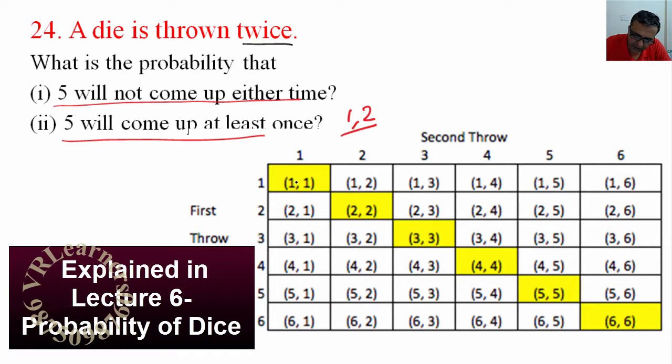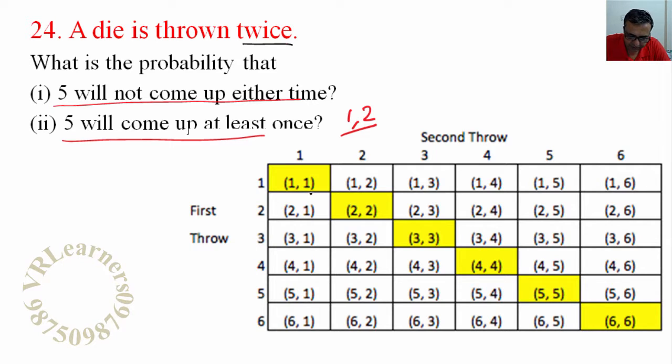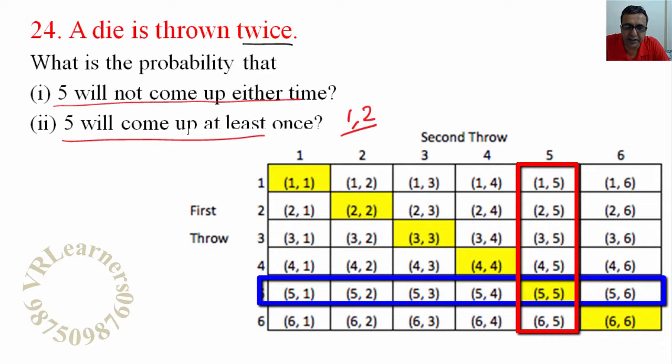So we have these 36 total possibilities - whether it comes once or twice, on the first throw or second throw.